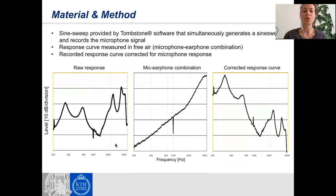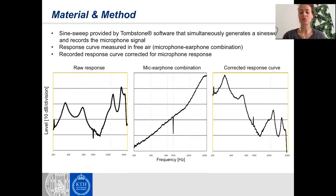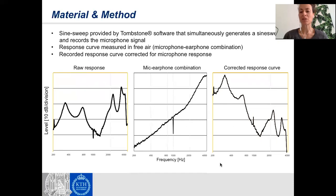This is what we get as a response curve. On the left is the response curve after excitation of the system by Thomstone software, which generates the sine sweep and also records the microphone signal. The middle panel represents the microphone-earphone combination. Combining those two curves, you obtain the corrected response curve, which is quite a realistic estimate of the transfer function of the vocal tract — in this case, the vowel U.